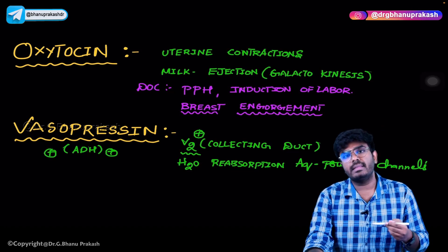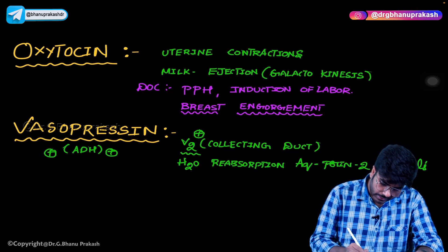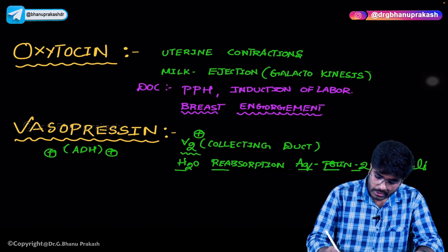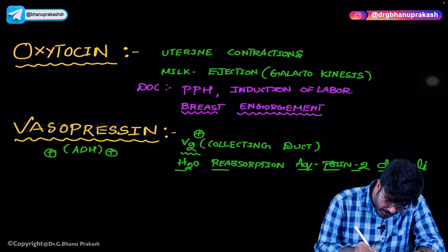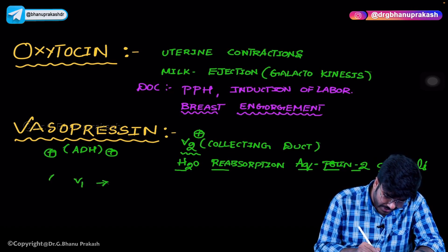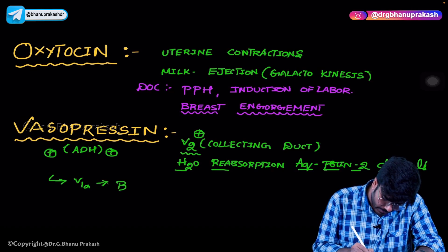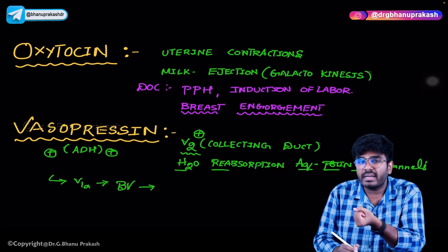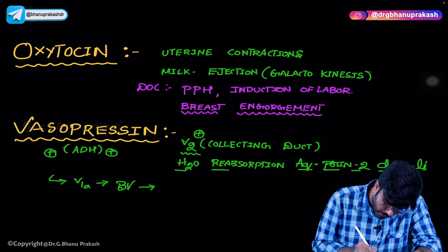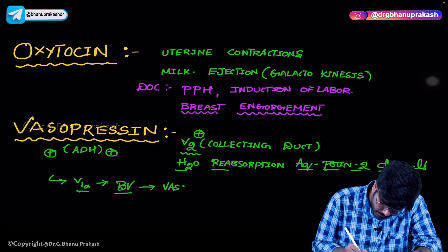So vasopressin helps in water reabsorption by implanting aquaporin-2 channels on collecting ducts, acting on V2 receptors. There are also V1 receptors — specifically V1a receptors — present on the blood vessels. When vasopressin acts on V1a receptors on the smooth muscles of blood vessels, it causes vasoconstriction, which increases blood pressure.